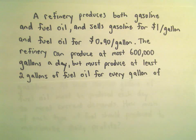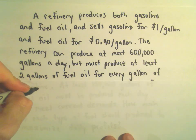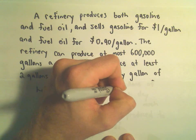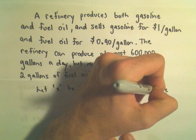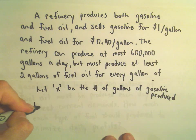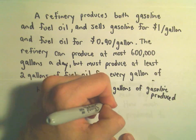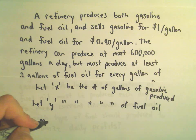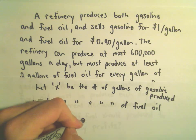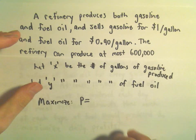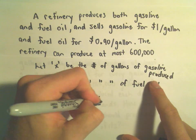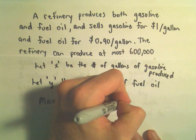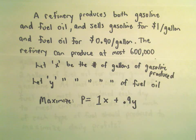We're going to set up a system of equations and inequalities. I'm going to let x be the number of gallons of gasoline produced over the course of one day, and we'll let y be the number of gallons of fuel oil produced. We're trying to maximize the function — we'll call it P. You get a dollar per every gallon of gasoline, so we'll get 1 times x. And you get 90 cents a gallon from the fuel oil, so P equals 1x plus 0.9 times y. That's the function we're trying to maximize.